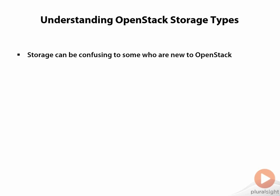Storage itself can be a confusing topic for many who are brand new to OpenStack or brand new to cloud environments. It probably rivals networking as one of the more confusing pieces of a cloud product. Within OpenStack at this time there are two storage products. One is called Cinder and the other is called Swift. Each of these projects is a standalone core project and they've been around for quite some time.